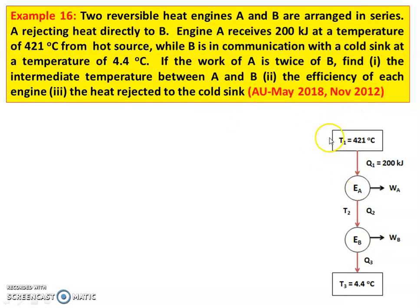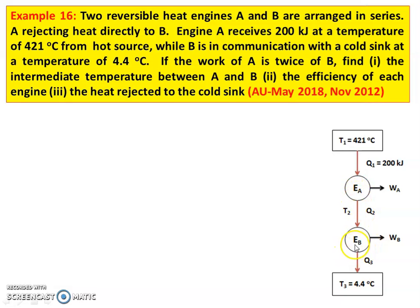This is the diagrammatic representation of the problem. Engine A is taking heat Q1 equal to 200 kilojoules from temperature 421 degree Celsius. Engine A is producing work WA and rejecting heat Q2 at temperature T2 to engine B. The heat rejected by engine A is equal to the heat input to engine B. Engine B produces work WB and rejects Q3 to temperature T3 equal to 4.4 degree Celsius.